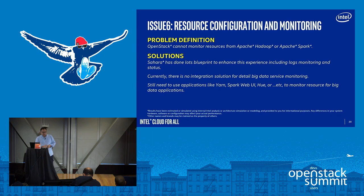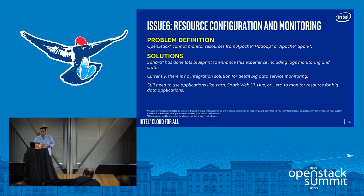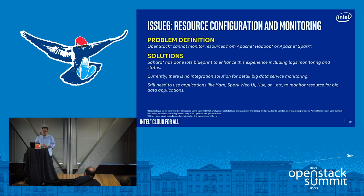Problem six is resource configuration and monitoring. OpenStack cannot monitor resource usage from Hadoop out of the box. Sahara has plans and blueprints to add monitoring features, but it's not available yet. Currently there is no way to monitor or configure resources from the cloud layer when running big data in cloud. The approach people use today is still the traditional big data tools like YARN and Spark Web UI to monitor resources for big data workloads.